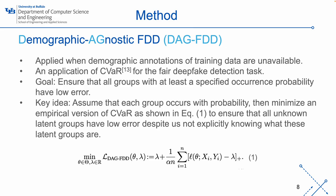DAG-FDD can be applied when demographic annotations of training data are unavailable. It is an application of the CVaR method for the fair deepfake detection task. Because we don't know which demographic group each training sample belongs to, the goal of this method is to ensure that all groups, with at least a specified occurrence probability, have low error. Specifically, we assume that each group occurs with a probability. Then, we can minimize an empirical version of CVaR, as shown in equation 1, to ensure that all unknown latent groups have low error, despite us not explicitly knowing these latent groups.